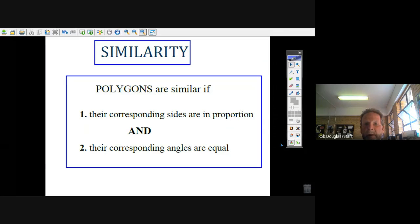Okay, we're going to look at similarity, and we're going to start with the idea that polygons are similar if their corresponding sides are in proportion and their corresponding angles are equal. So we need proportional sides and corresponding angles for polygons to be equal.